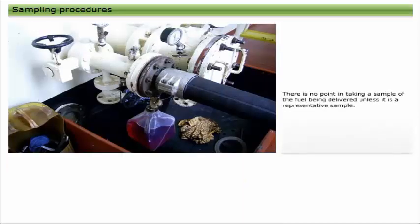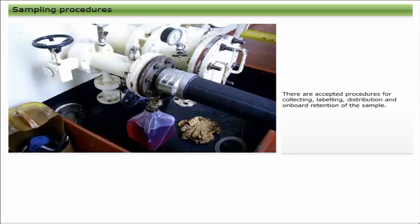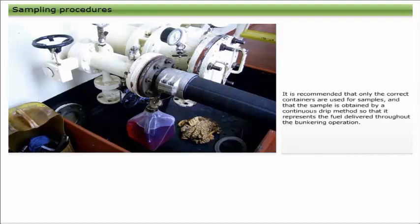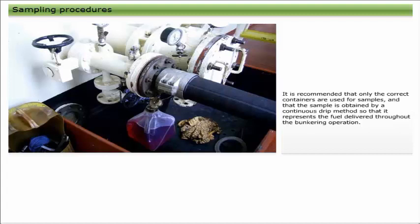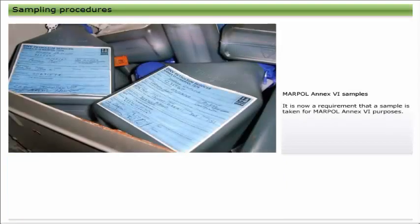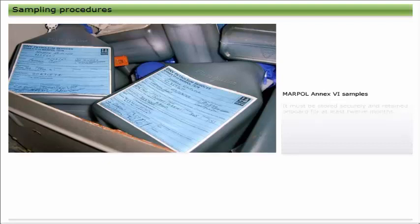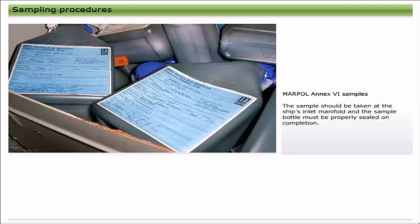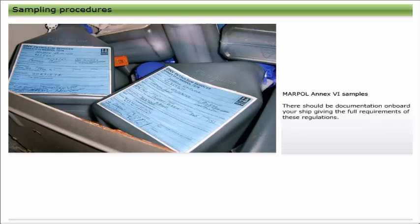There is no point in taking a sample of the fuel being delivered unless it is a representative sample. There are accepted procedures for collecting, labeling, distributing, and onboard retention of the sample, and you should be aware of the requirements for your vessel and follow them carefully. It is recommended that only correct containers are used and that the sample is obtained by a continuous drip method so that it represents the fuel delivered throughout the entire bunkering operation. It is now a requirement that a sample is taken for MARPOL Annex 6 purposes. This sample must be stored securely and retained on board for at least 12 months. It should be taken at the ship's inlet manifold, properly sealed on completion, and details of the sample bottle serial number must be added to the bunker delivery note and entered into the oil record book or log book.